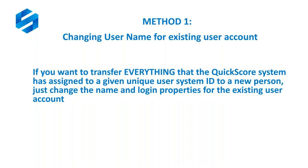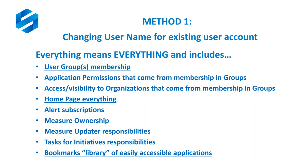QuickScore permissions, access rights, ownership, update, and assignee responsibilities are all tied to the unique system user ID — not the username. So if you want to transfer everything the system has assigned to an existing unique user ID to a new person, you can just change the name and login properties for the existing user account. And when we say everything, we mean everything: user group membership, access and visibility rights to organizations, and more.